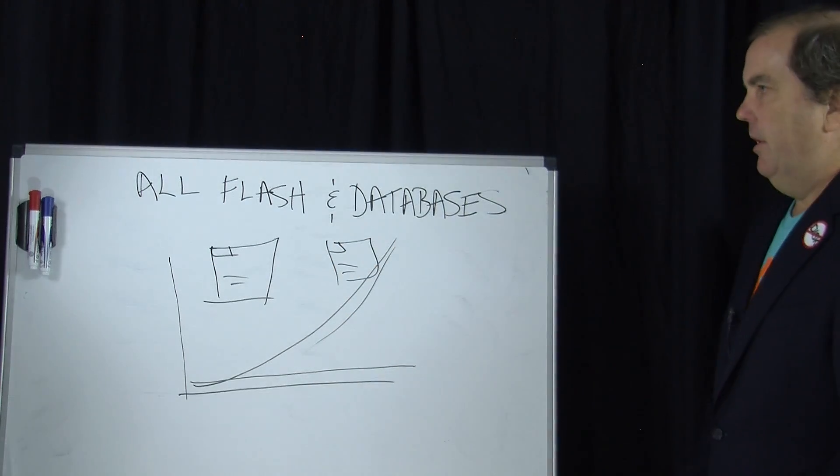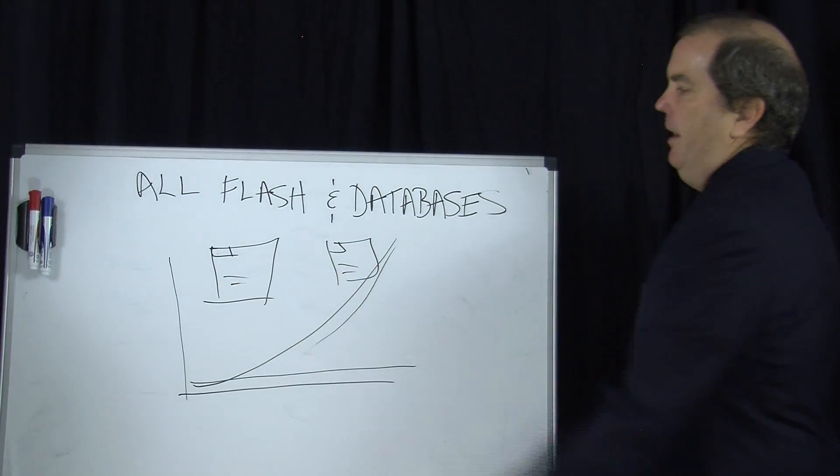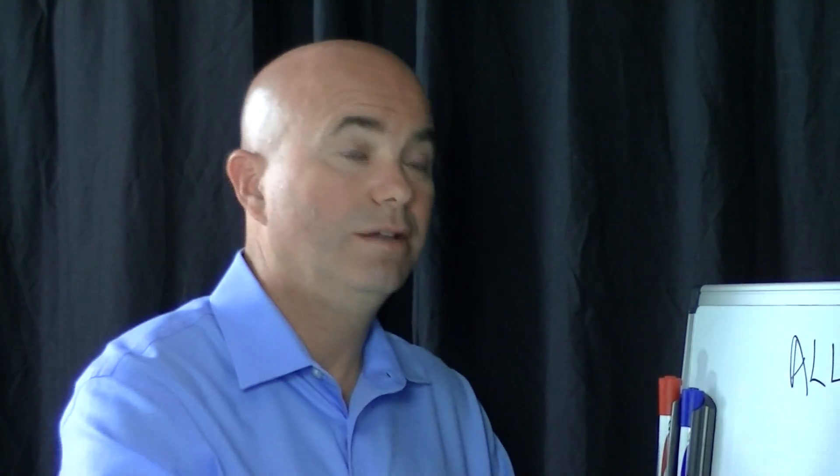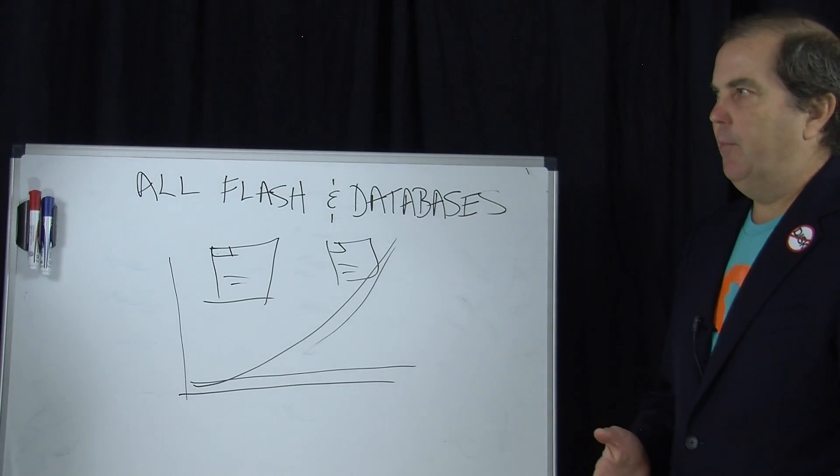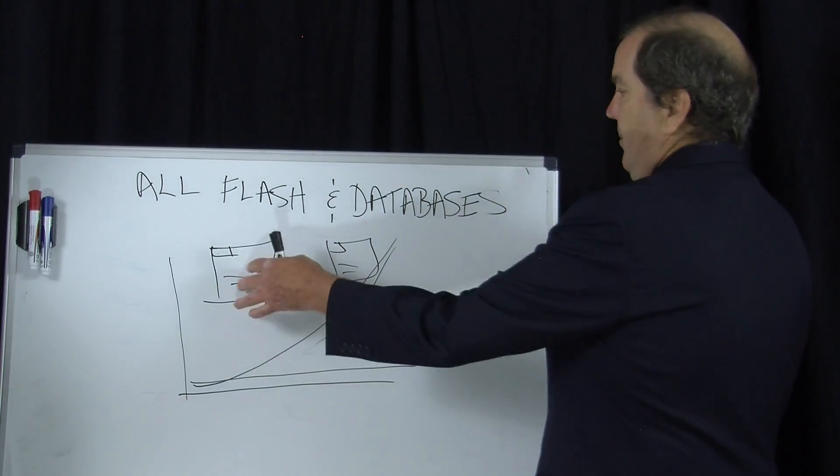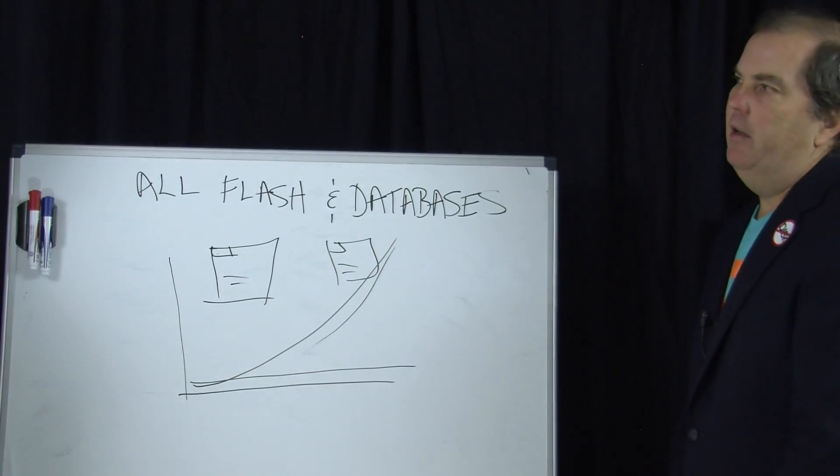So what we do is that we never write to a block that has data in it already. We always write to fresh, virgin Flash, if you will, which means we're immune from write amplification. And what's the impact to the database administrator if that's not managed well? So what will happen if it's not managed well is that performance will at some point unravel when you start writing or updating Flash that already has data on it.